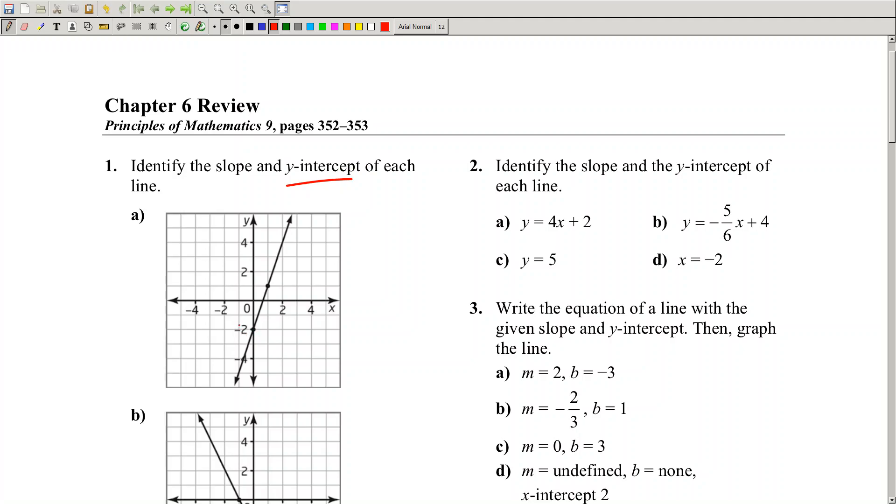This is the line. So the y-intercept is going to be negative 2, which means b equals negative 2.